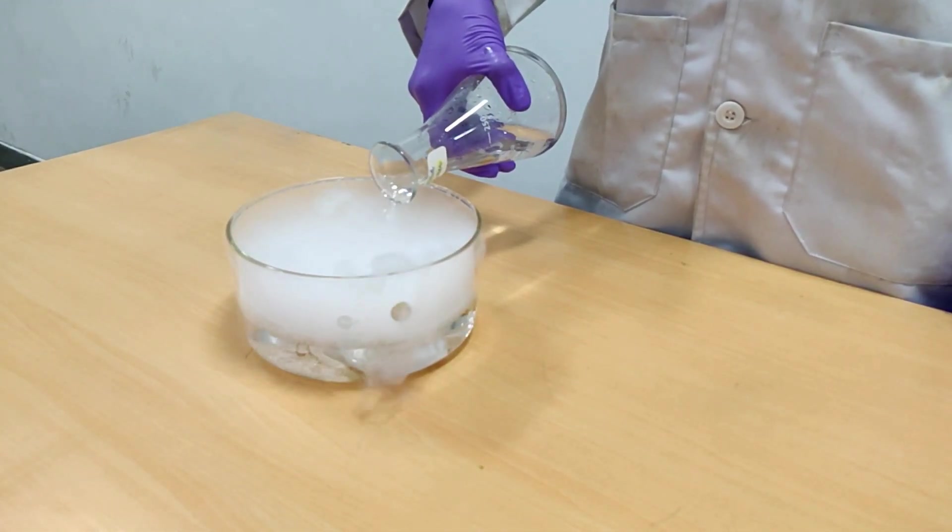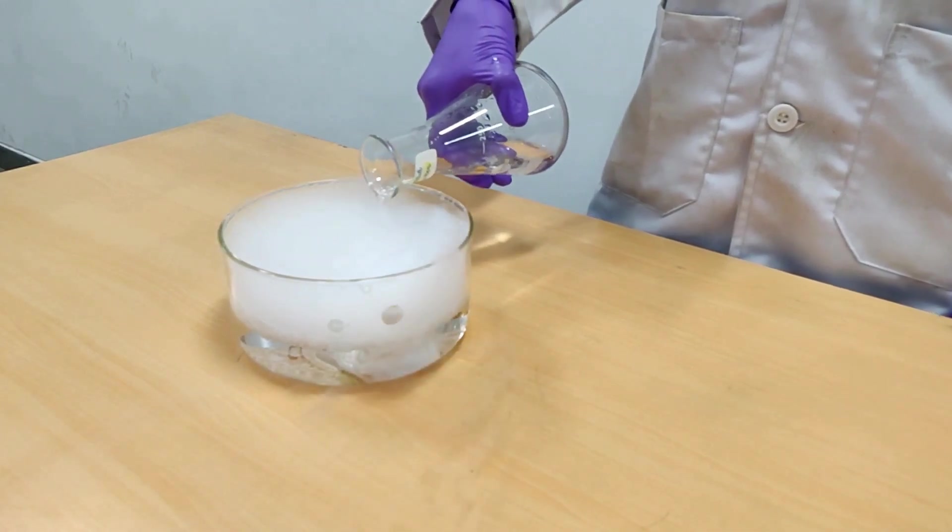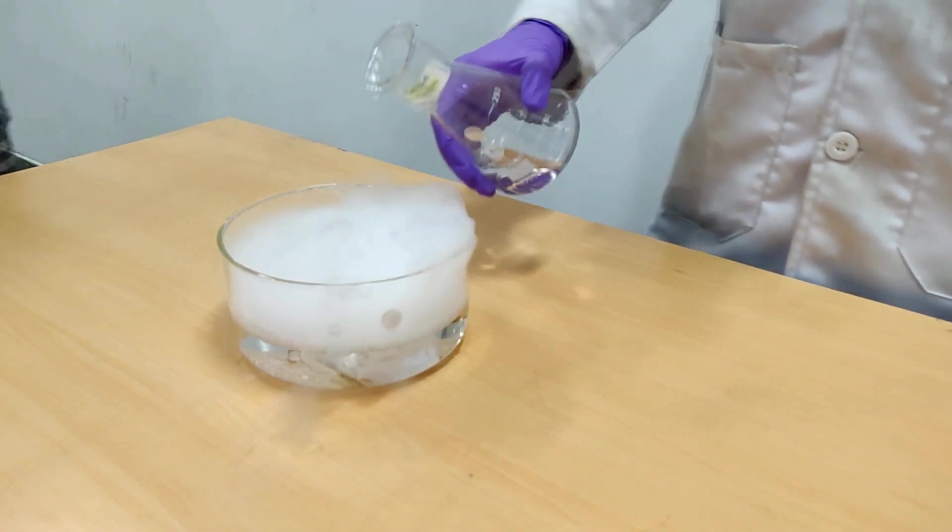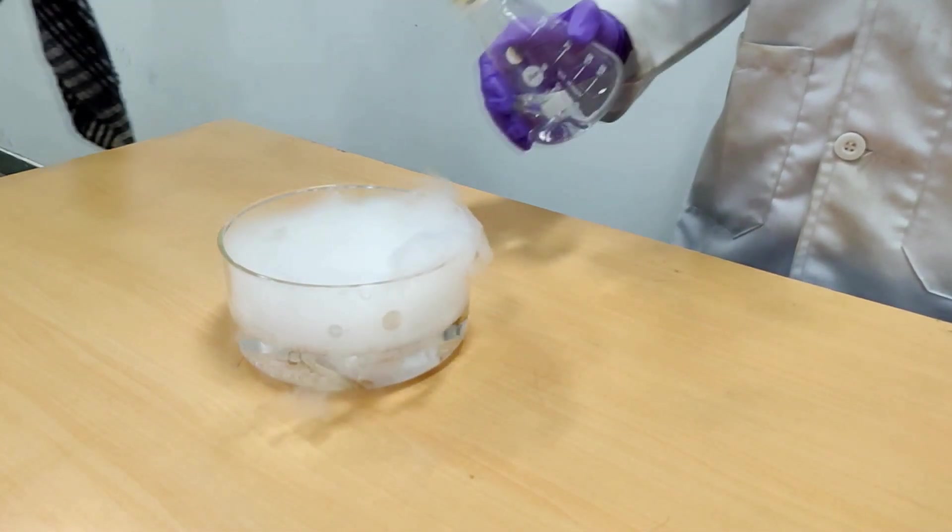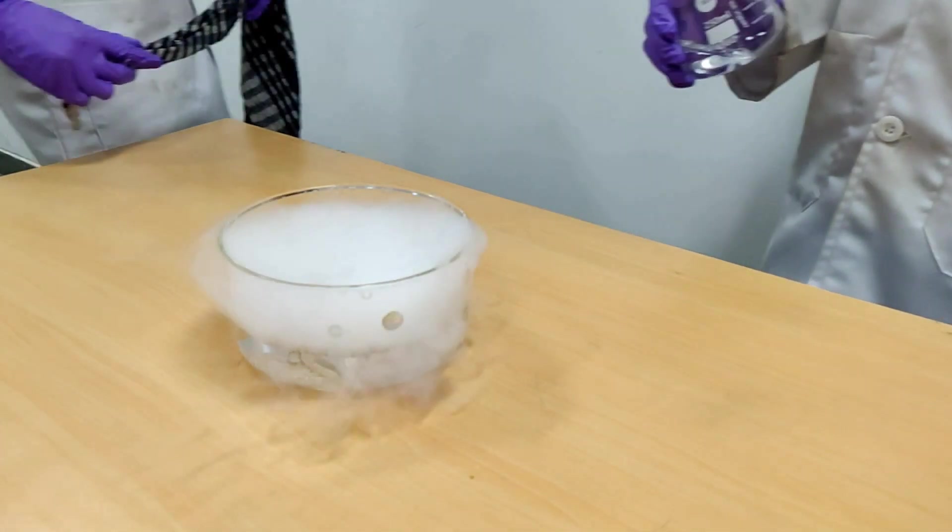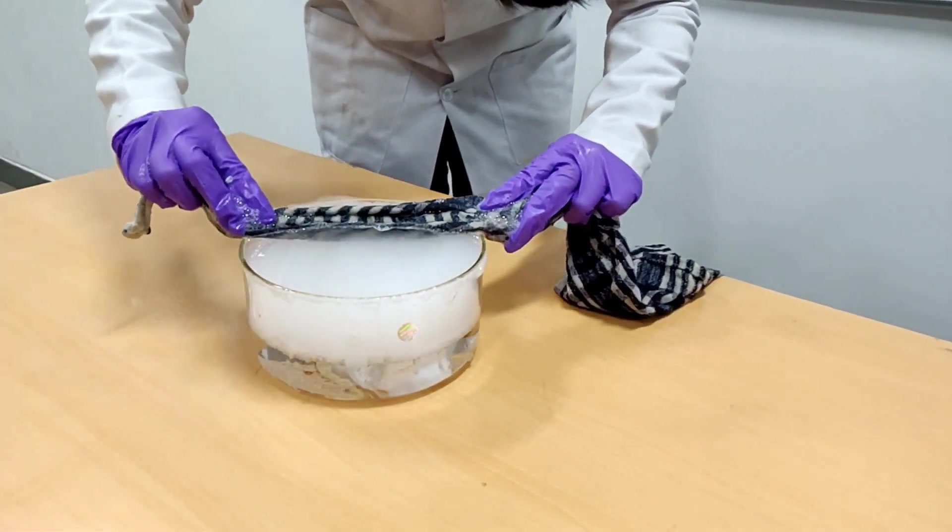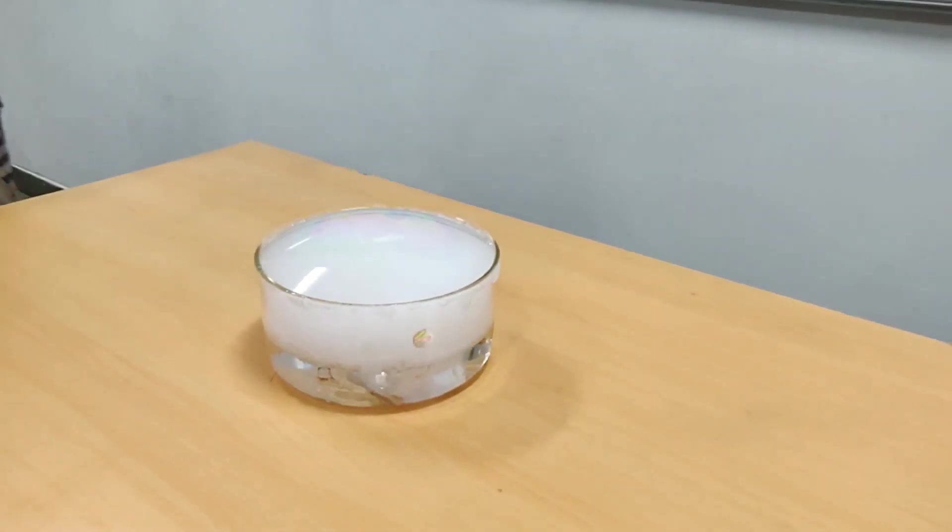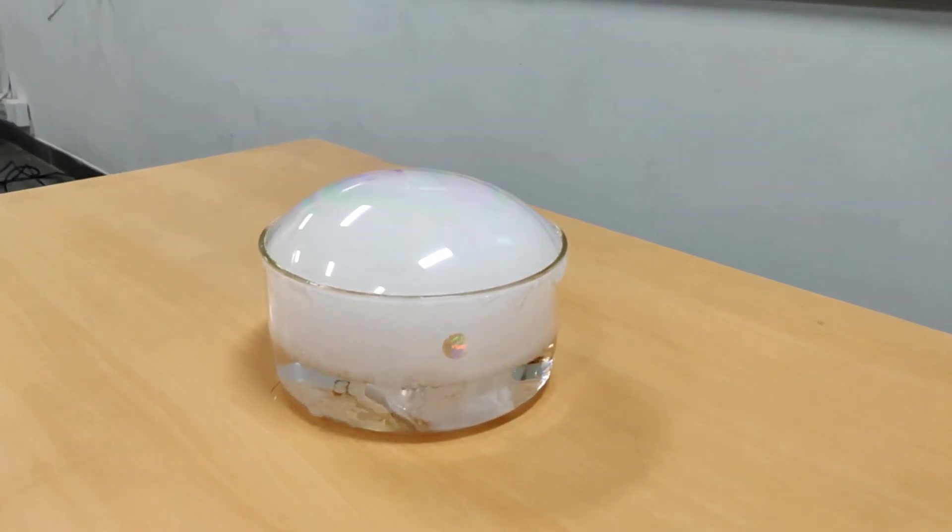When you drop a piece of dry ice in a bowl of water, the gas that you see is a combination of carbon dioxide and water vapor. So the gas that you see is actually a cloud of tiny water droplets. The thin layer of soap film stretched across the rim of the bowl traps the expanding cloud to create a giant bubble.